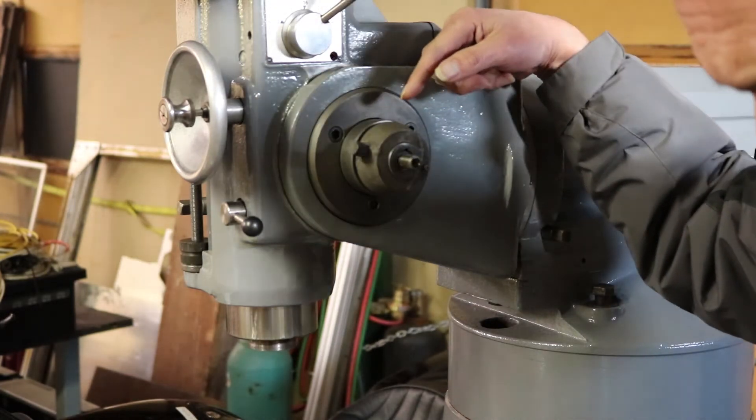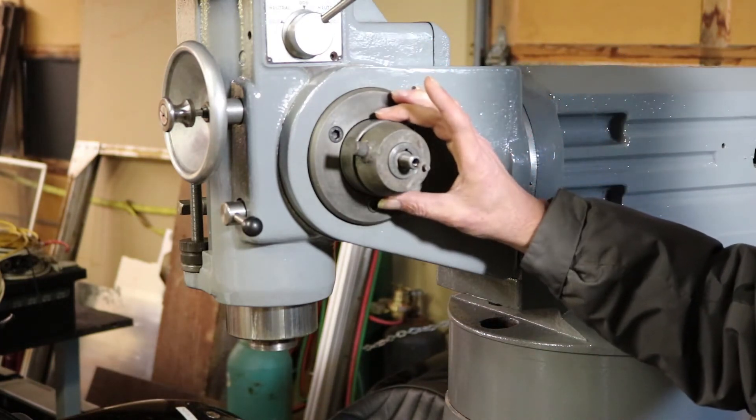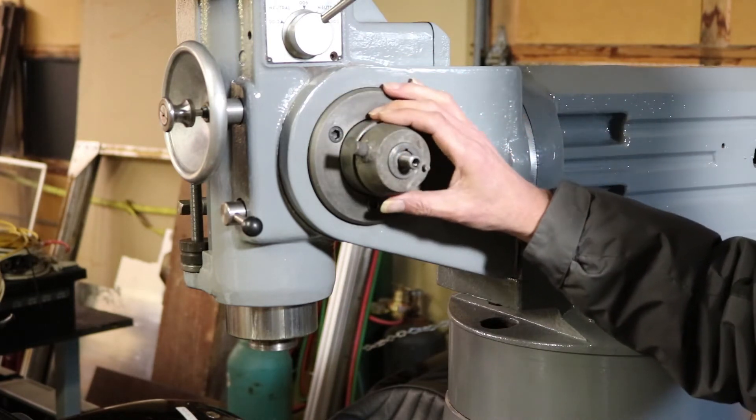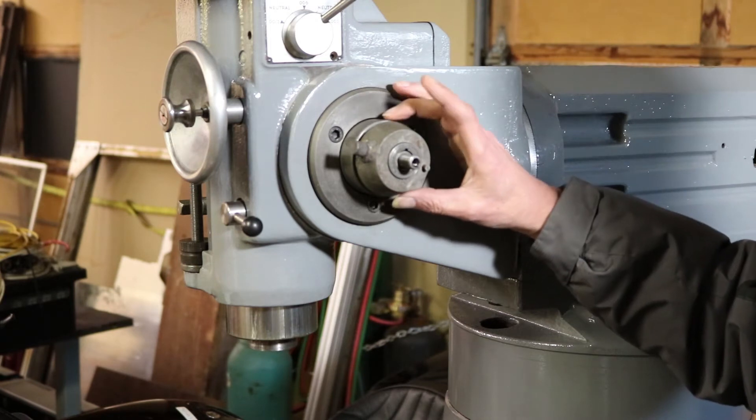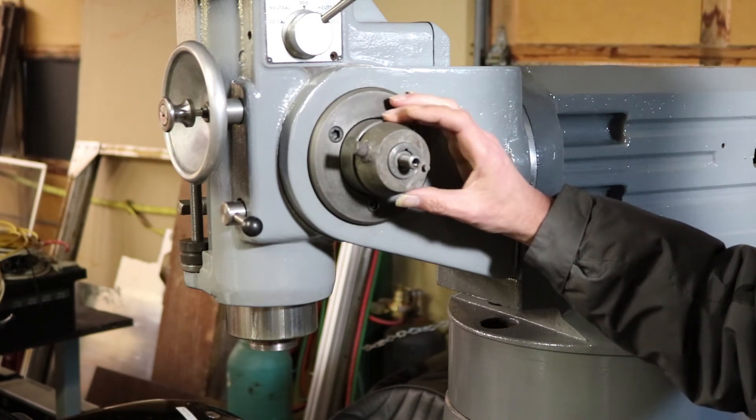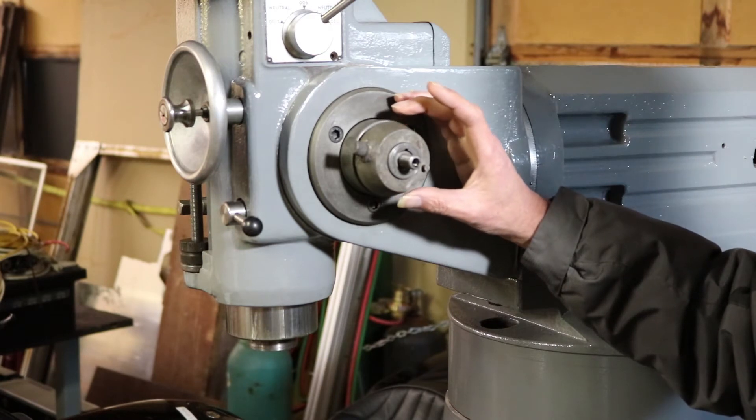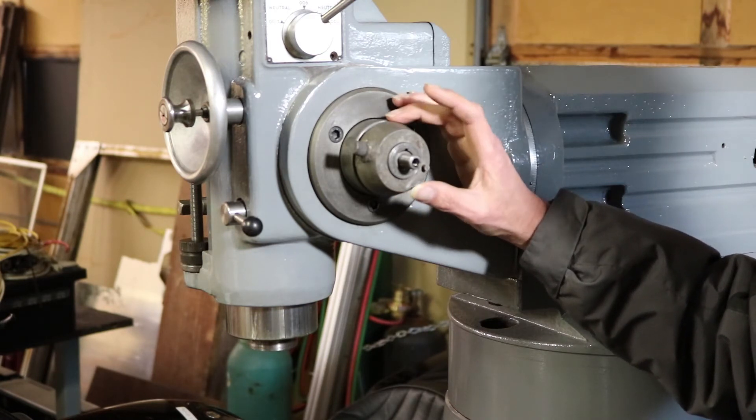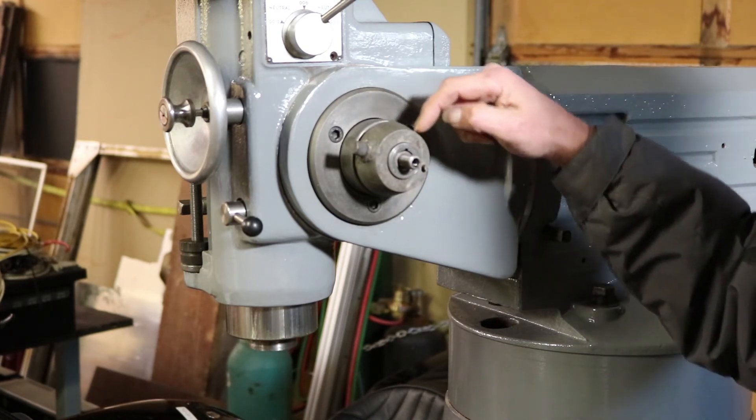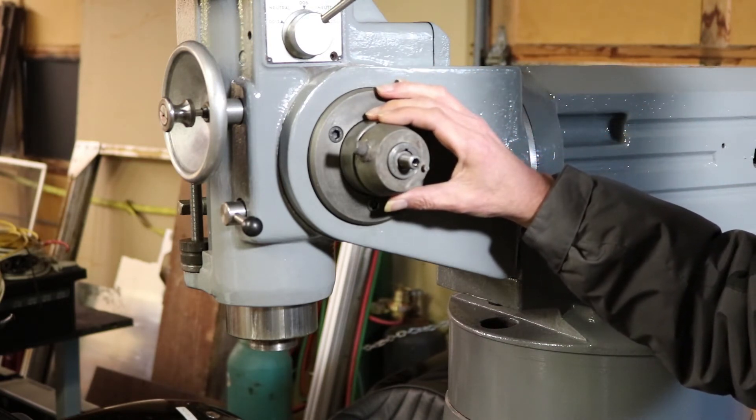So I used my oxy-acetylene torch, which I kind of didn't want to use just because I didn't know what all was in here, what might be damaged. But because I was having so much trouble, I ended up getting out the oxy-acetylene torch and I heated this piece up. It was pretty hot, glowing red.